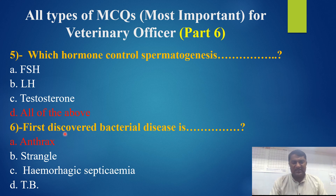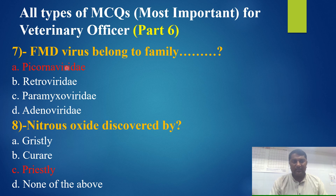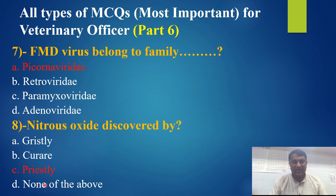The first discovered bacterial disease is — anthrax, strangles, hemorrhagic septicemia, or TB? The best answer is anthrax. FMD virus belongs to the family — Picornaviridae, Retroviridae, Paramyxoviridae, or Adenoviridae? The best answer is Picornaviridae. Nitrous oxide was discovered by — Gristli, Coreri, Priestley, or none of the above? The best answer is Priestley.